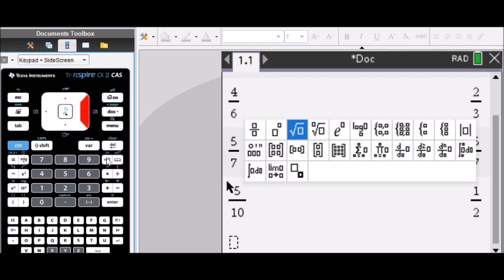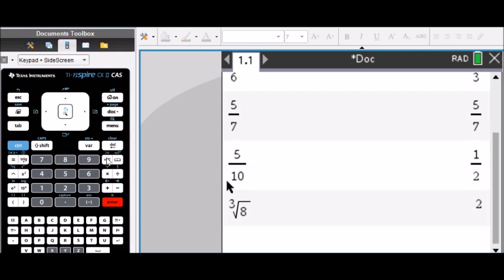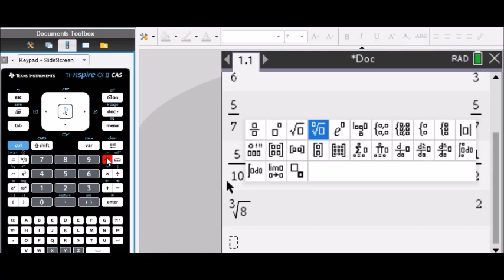Many people ask me, how do you take not the square root, but say the cube root? Well, you got to use this option here. Put in your 3 for cube and your number. Enter. Cube root of 8 is 2. OK, so that's simple.